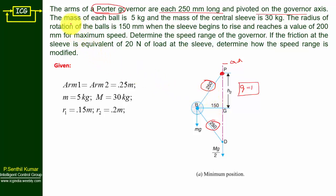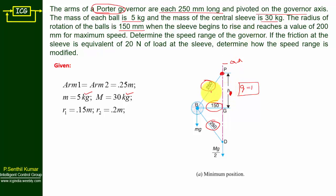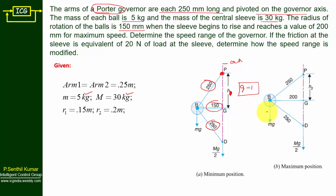The remaining parameters: the mass of each ball is 5 kg (small m), and the mass of the central sleeve is 30 kg (capital M). The radius of rotation of the ball is 150 mm (r1) when the sleeve begins to rise — this is the minimum position h1. It reaches 200 mm for maximum speed, giving the maximum position h2. We need to draw one diagram for minimum and one for maximum position.